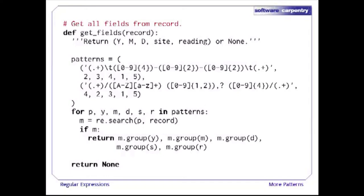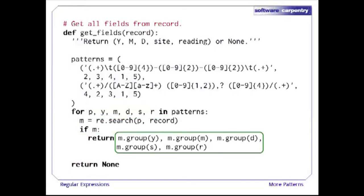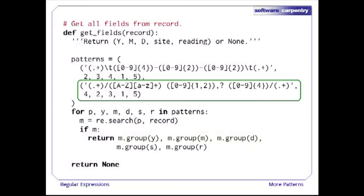This improved version of the function also gets the site and reading as well as the year, month, and day. More importantly, this function is more declarative. The variable 'patterns' stores one entry for each format of record we expect to parse. The first element of each entry is a regular expression to match data in that format. The remaining fields are a permutation of the group indices. In our loop, we pull the pattern and indices for year, month, day, site, and reading out of each entry in turn. If the pattern matches, we return the matched groups permuted so the data always comes back in the same order: year, month, day, site, and reading.